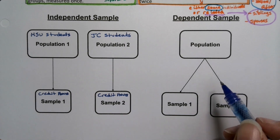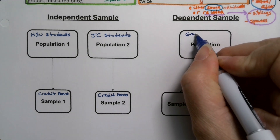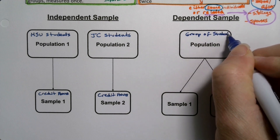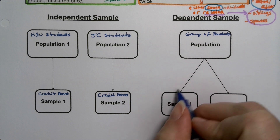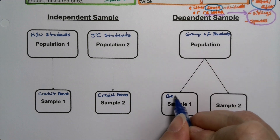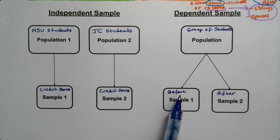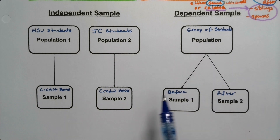For a dependent sample, I could take a group of students — it could be JC students or whatever — and measure some response before and after. So let's say before the semester they thought this, but after the semester was over they thought this. That's before and after — one group measured twice.